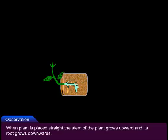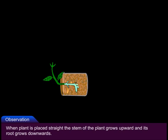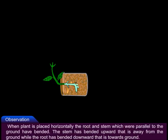Observation: When the plant is placed straight, the stem of the plant grows upwards and its root grows downwards.